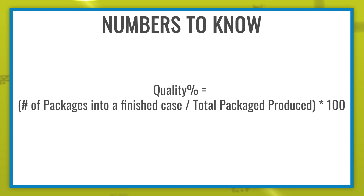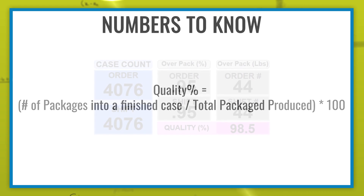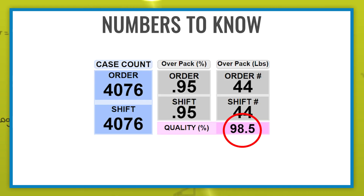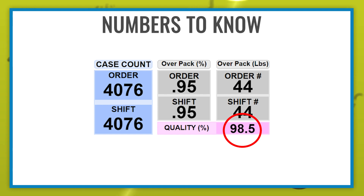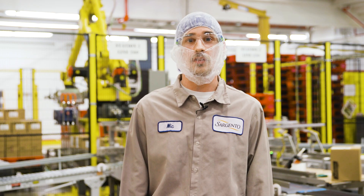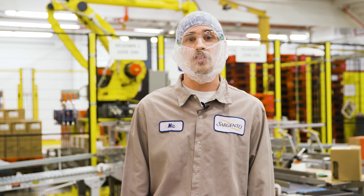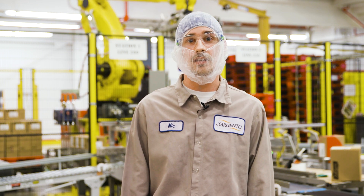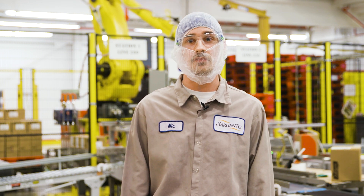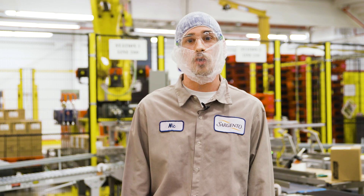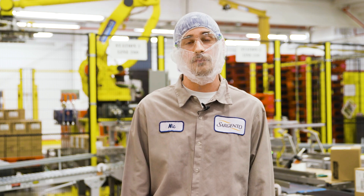From the digital display, we see that the line was averaging 98.5% quality for the current production order. If the production order was set to produce 6,000 cases and there are four packages per case, how many packages did not make it into the finished case if the line continued to produce at the current quality rate?